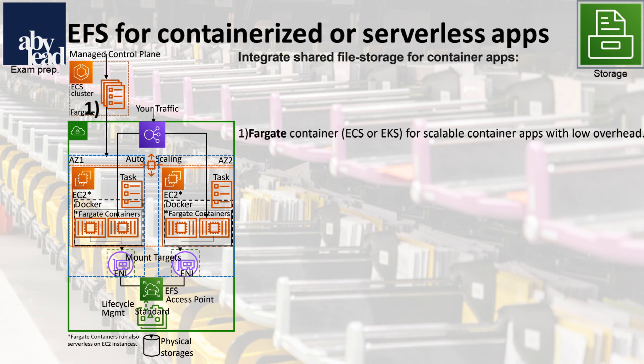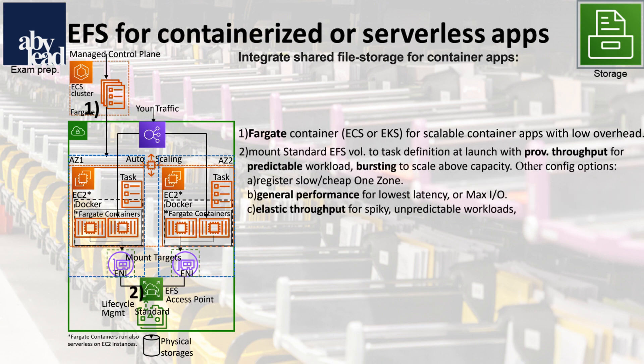For example, use the Fargate container type in ECS or EKS for its predictable and highly scalable workloads. Start by configuring EFS provisioned throughput with optional bursting, and mount it to the task definition at its launch.